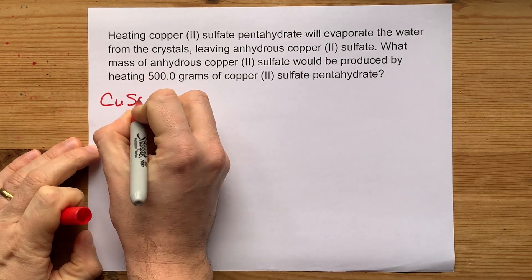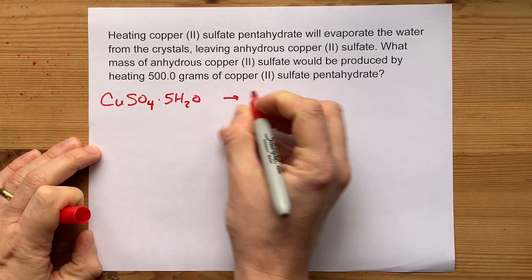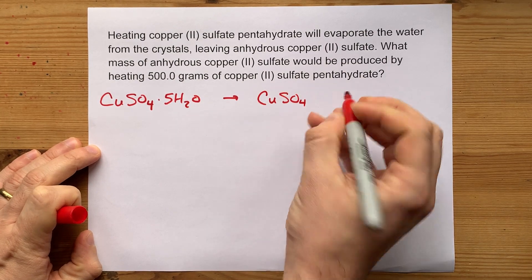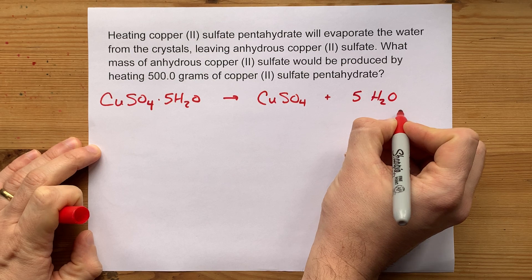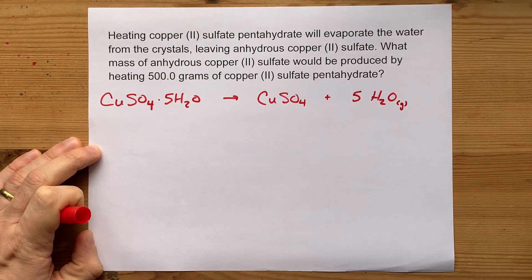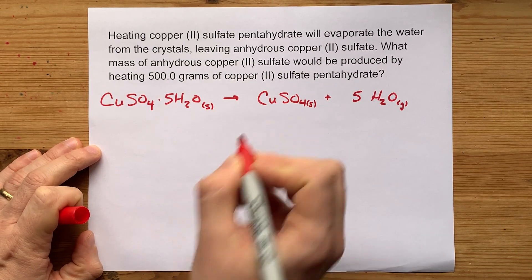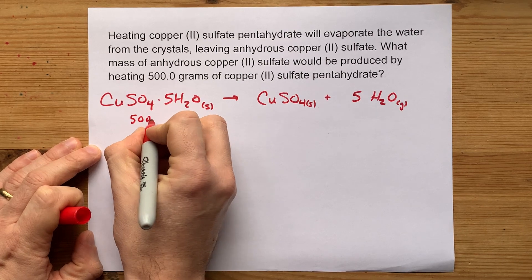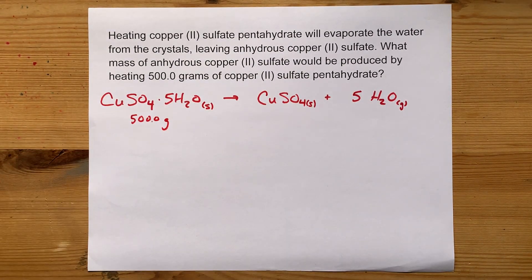The CuSO4·5H2O is getting heated, and it's giving you the CuSO4, obviously, along with five extra H2O molecules. Now those are driven off as steam. This is a solid, and this hydrated compound is also a solid. But the point is that we're going to start with 500 grams of this, and it's going to decompose to give us some new stuff.